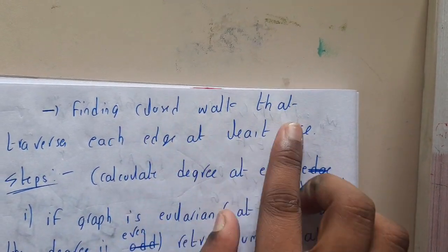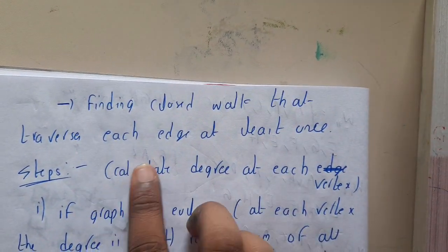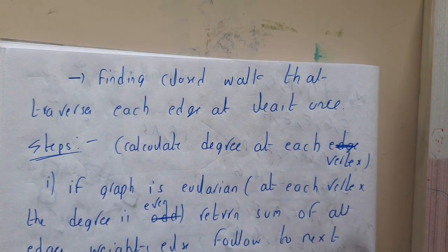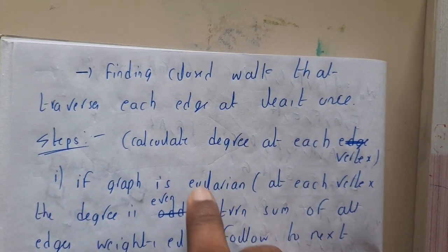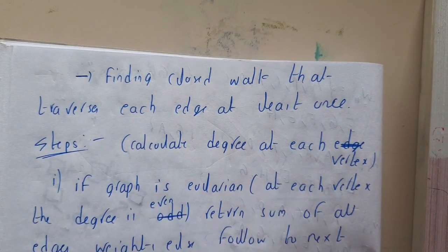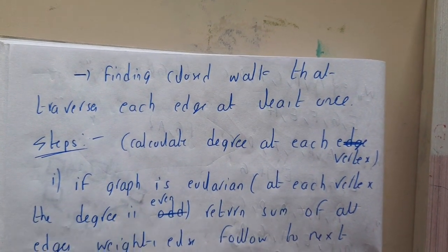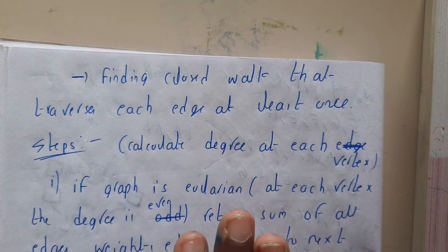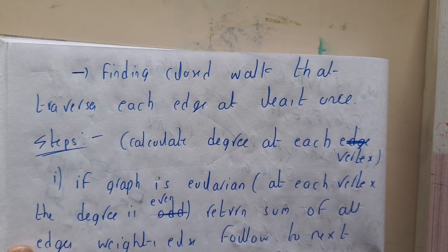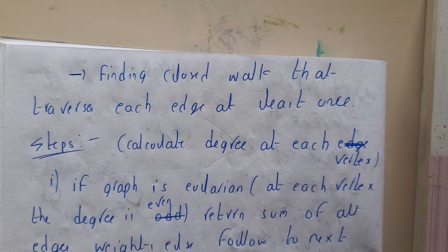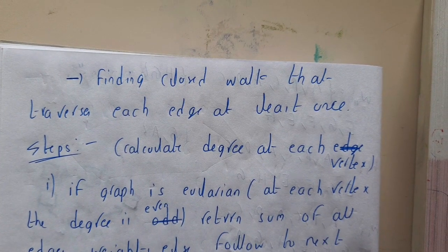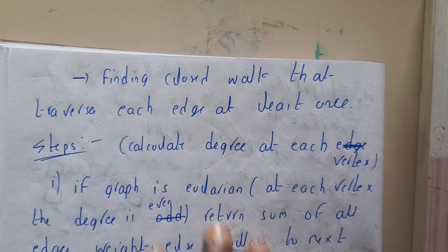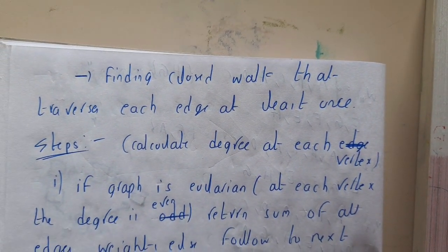The problem involves finding a closed walk that traverses each edge at least once. One important rule is that you must traverse along each and every edge. This is why the problem also falls under the part of Eulerian concepts.